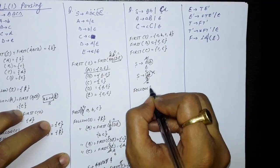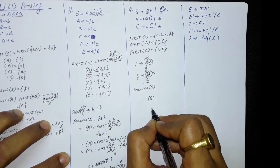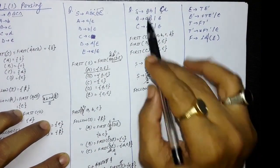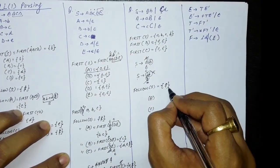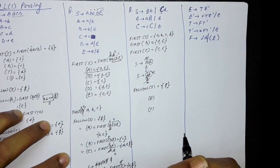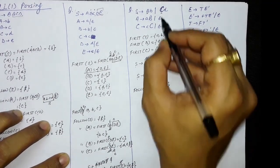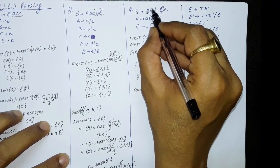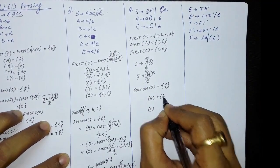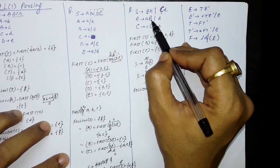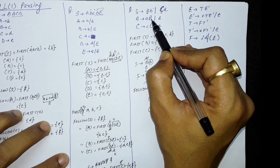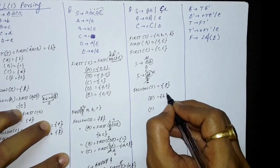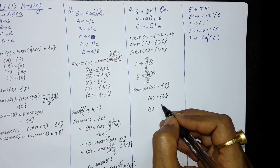Now find the FOLLOW of these symbols. FOLLOW of capital S is dollar — it is the start symbol and does not appear elsewhere on the right hand side. For FOLLOW of capital B: B appears in S produces capital B small b. After B there is small b, so FOLLOW of capital B equals small b. B also appears in B produces small a capital B; since B is last here, FOLLOW of B equals FOLLOW of B — no change. So FOLLOW of B is small b.